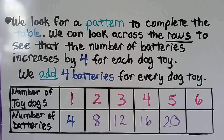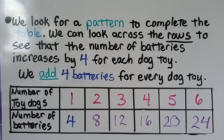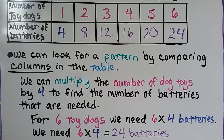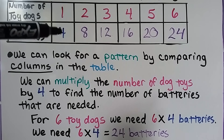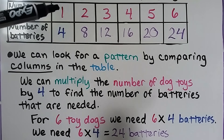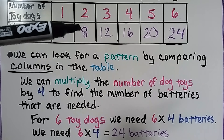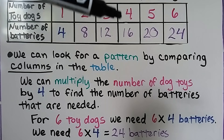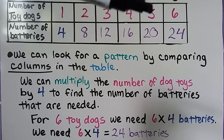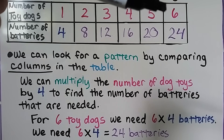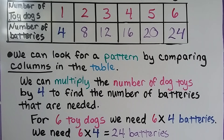We look for a pattern to complete the table. We can look across the rows to see that the number of batteries increases by 4 for each dog toy. So to increase by 4, we add 4 and get 24. The pattern is to add 4 for the number of batteries. We can also look for a pattern by comparing columns — we can multiply the number of dog toys by 4 to find the number of batteries needed: 1×4=4, 2×4=8, 3×4=12, 4×4=16, 5×4=20, and for 6 toy dogs, 6×4=24 batteries. The rule for this table is to multiply by 4.